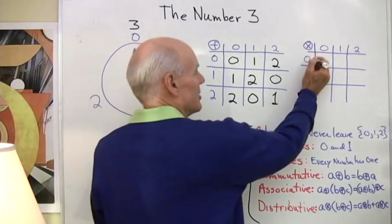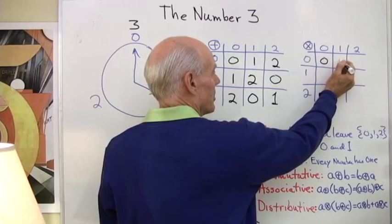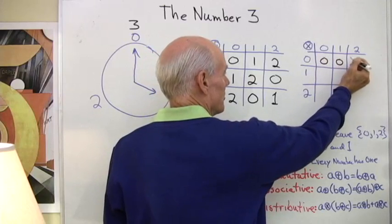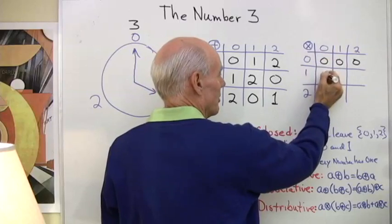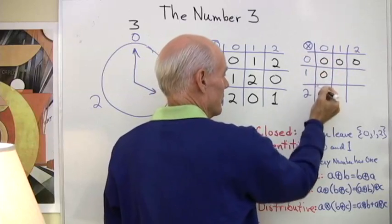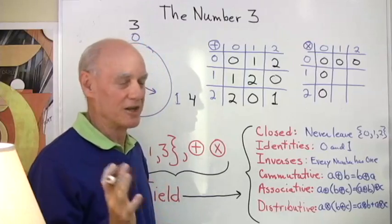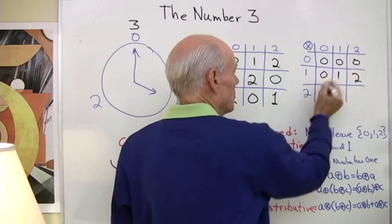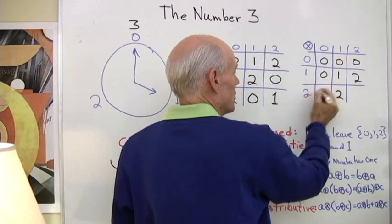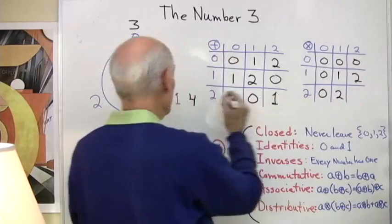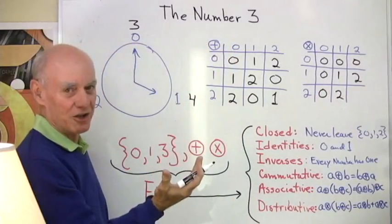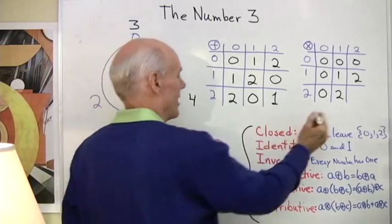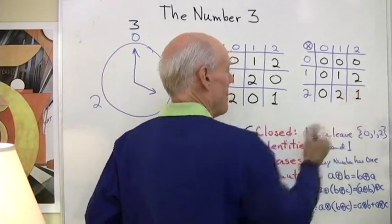Let's do multiplication. 0 times 0 is 0, 0 times 1 is 0, 0 times 2 is 0, 1 times 0 is 0, 2 times 0 is 0. So every time I multiply by 0, I still get 0. 1 times 1 is 1, 1 times 2 is 2, 2 times 1 is 2, and 2 times 2 normally would be 4, but in circle arithmetic, clock arithmetic, I think of that as number 1.